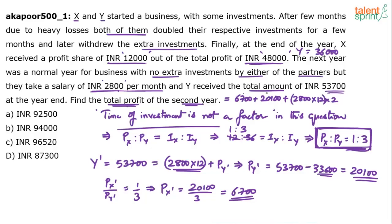Total profit = profit of X + profit of Y + total salaries = 6,700 + 20,100 + (33,600 × 2) = 6,700 + 20,100 + 67,200 = ₹94,000. So the total profit for the second year is ₹94,000, which is option B.